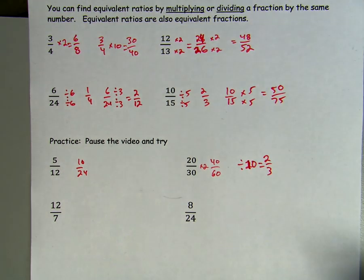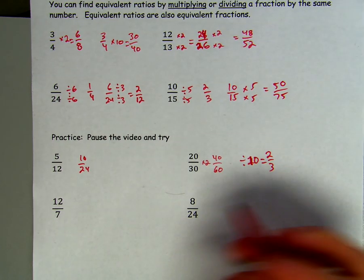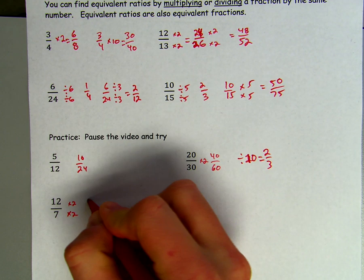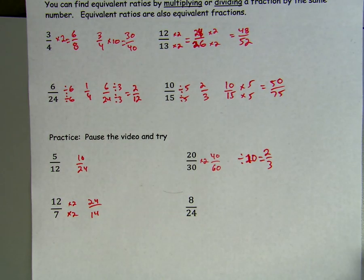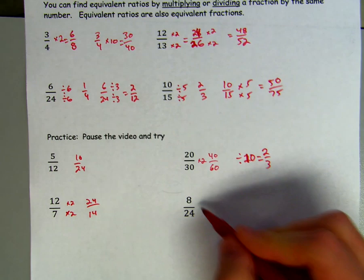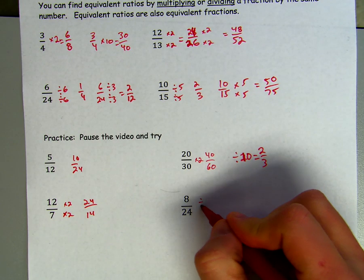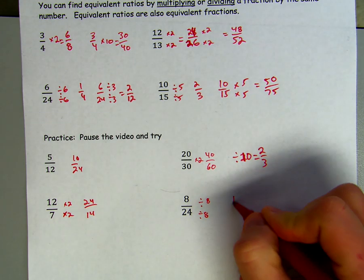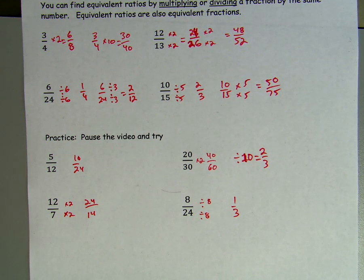12/7 — notice how it's an improper fraction. The same rules apply to it. You can multiply the top and the bottom by 2 and get 24/14. For 8/24, you could divide by 8 top and bottom and get 1/3. So there are just a number of possible answers you could get.